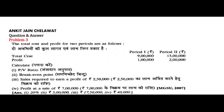Marginal Costing Unsolved Question No. 3. The total cost and profit for 2 periods are as follows: Period 1 Total Cost 9 lakh rupees, Period 2 Total Cost 13 lakh rupees. Profit: 1 lakh rupee and 2 lakh rupee. Calculate PV Ratio, Breakeven Point Sales, Sales required to earn a profit of ₹2,50,000, and Profit at a sale of ₹7 lakh.